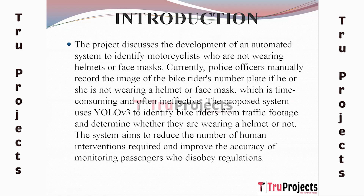The system is designed to detect motorcyclists who do not wear helmets. Currently, if a bike rider is not wearing a helmet, police officers physically record the image of the number plate, which is time-consuming and often inefficient. The suggested project uses YOLO v3 to recognize bike riders in traffic film and assess whether or not they are wearing a helmet, reducing human intervention and improving monitoring accuracy.